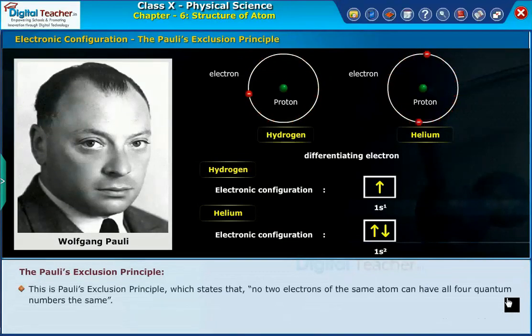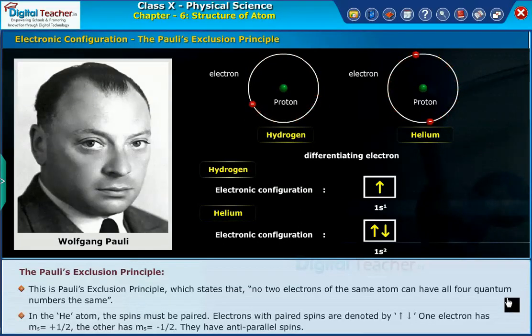This is Pauli's exclusion principle, which states that no two electrons of the same atom can have all four quantum numbers the same. In the helium atom, the spins must be paired.